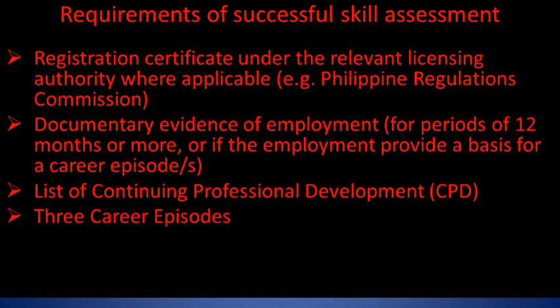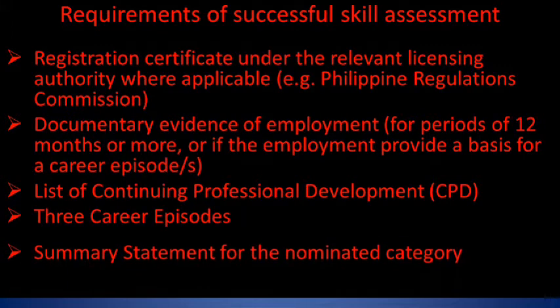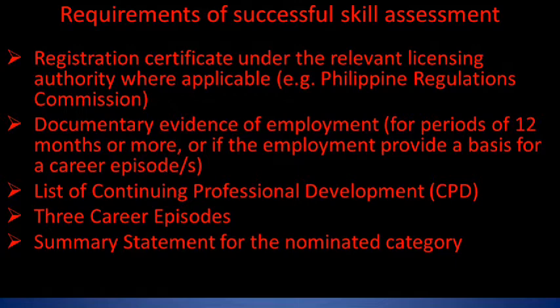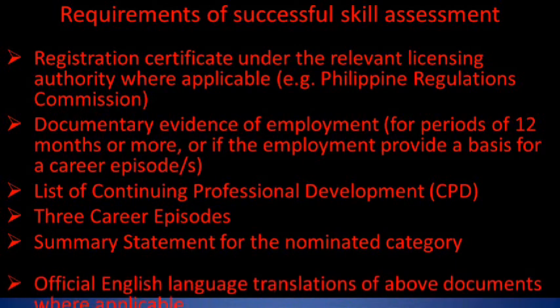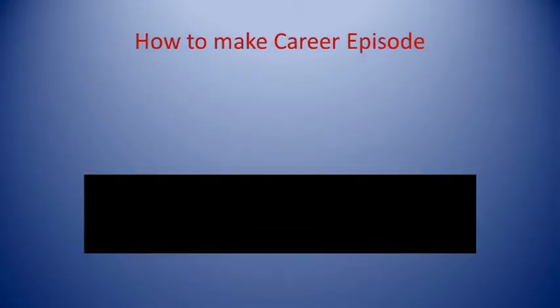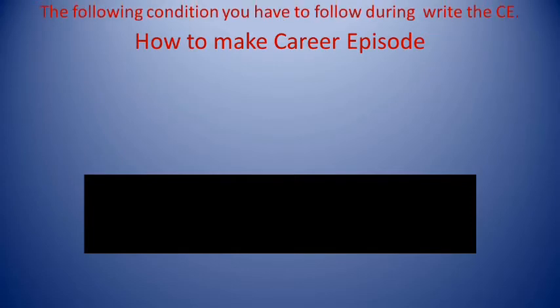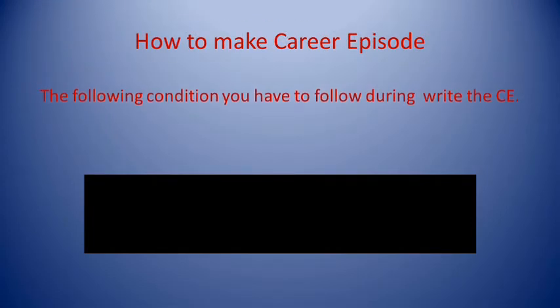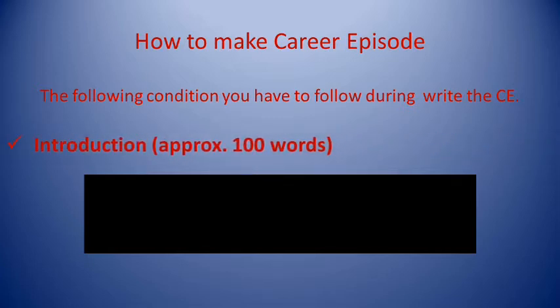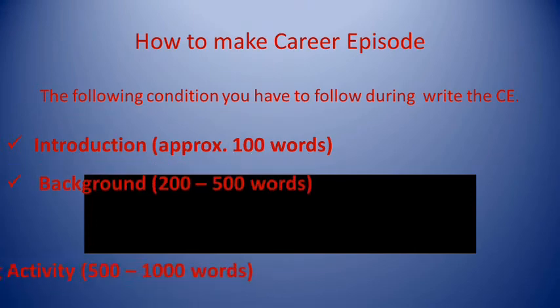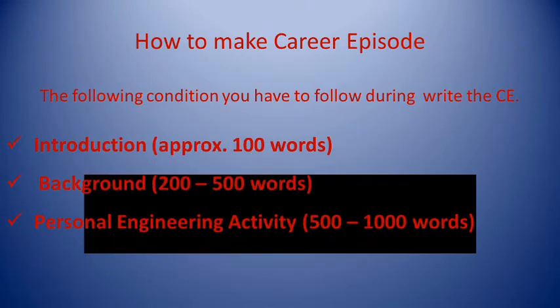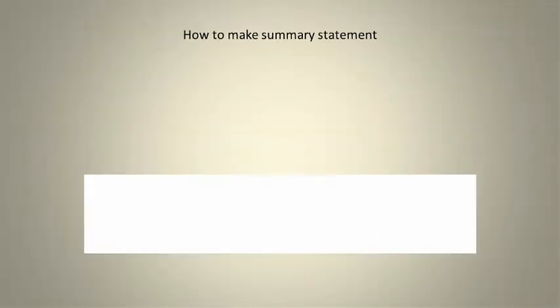You also need a summary statement for the nominated category, and official English language translations of the above documents where applicable. When writing career episodes, you must follow this structure: introduction approximately 100 words, background 200 to 500 words, personal engineering activity 500 to 1000 words, and a summary 50 to 100 words.